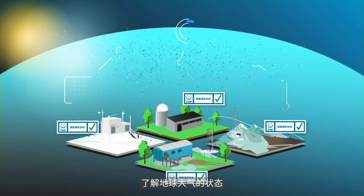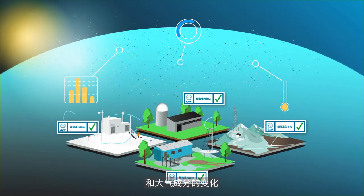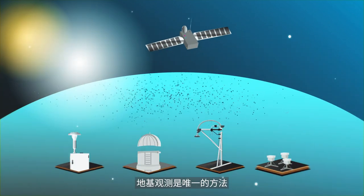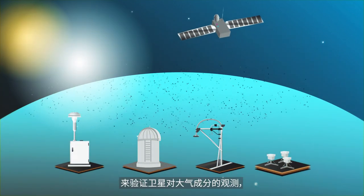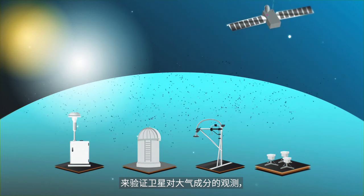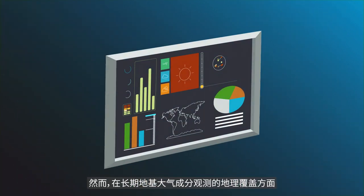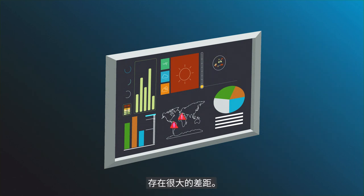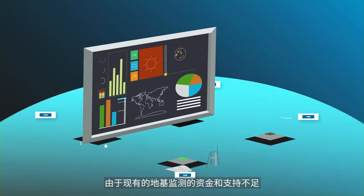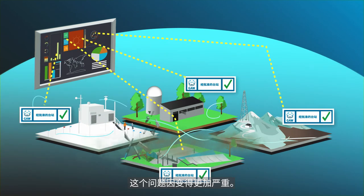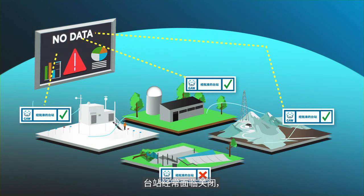Understanding the state of Earth's atmosphere and the changes in atmospheric composition requires dedicated measurements. Ground-based observations are the only way to verify satellite observations of atmospheric composition that provide global overview. However, there are big gaps in the geographical coverage of long-term ground-based atmospheric composition observations. The problem is exacerbated by insufficient funding and support for existing ground-based monitoring, and stations frequently face closure and important information is lost.